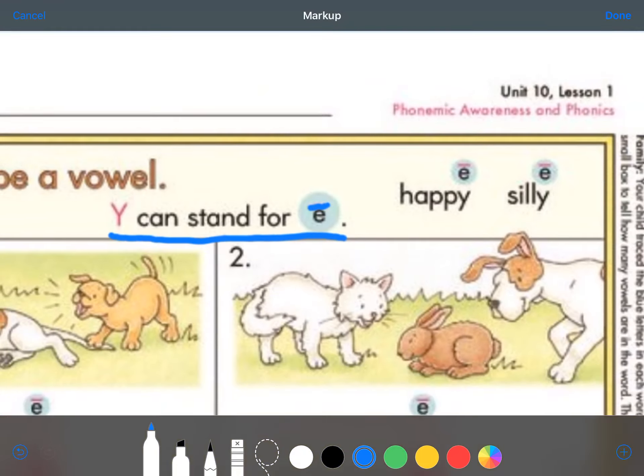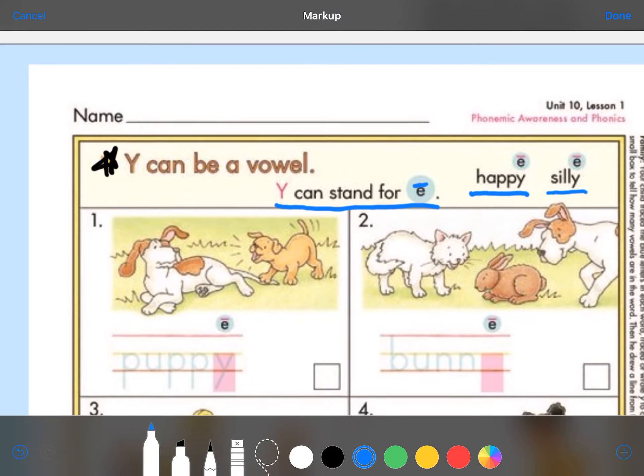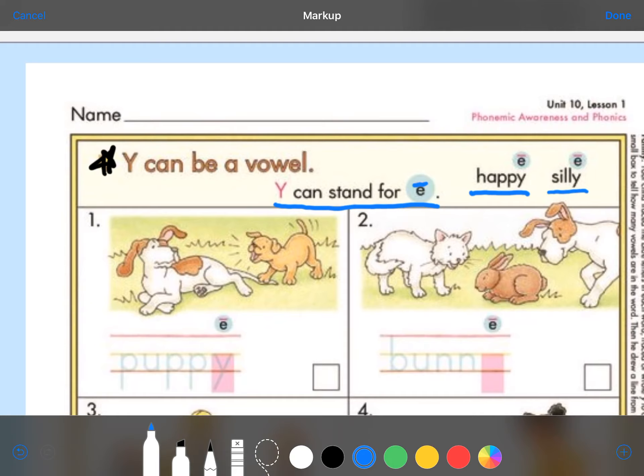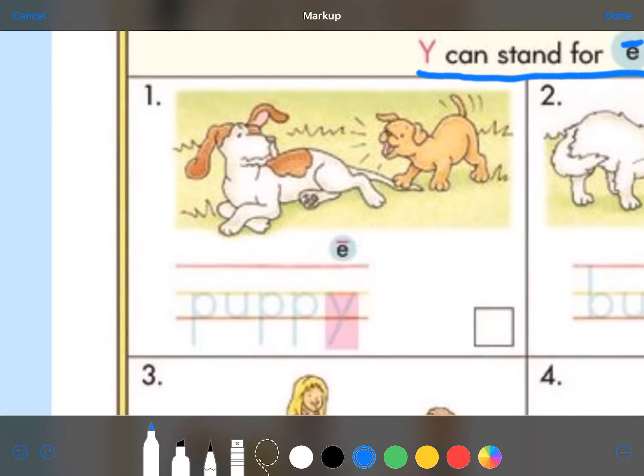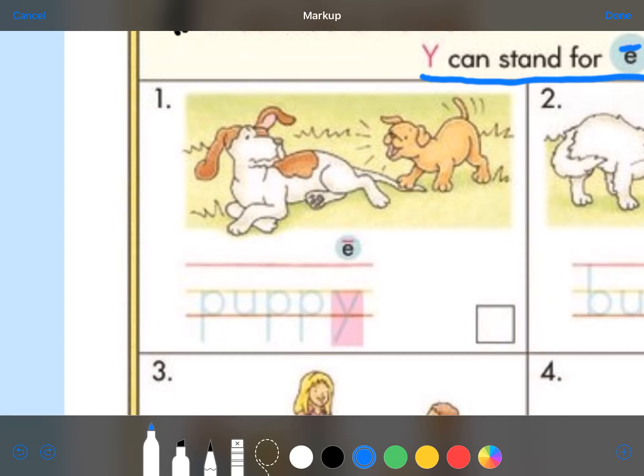Let's look at our two sample words. I have the word happy and the word silly. Happy and silly. Now, when a word ends in Y and it has another vowel that's not next to the Y, the Y stands for the long E sound. So, let's look at number one together.